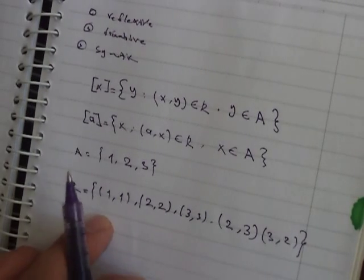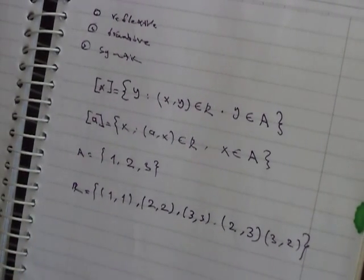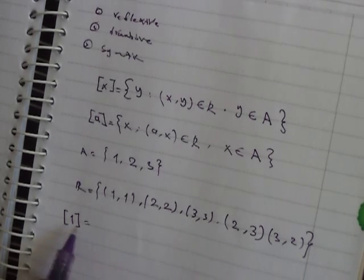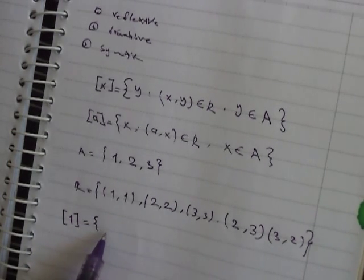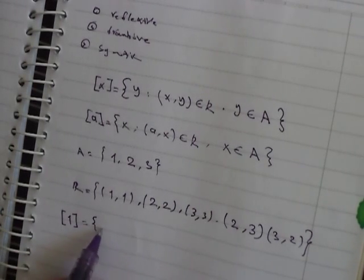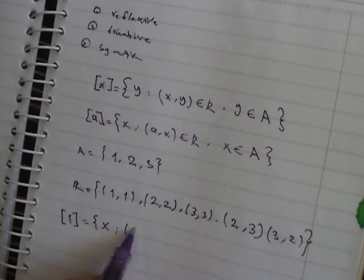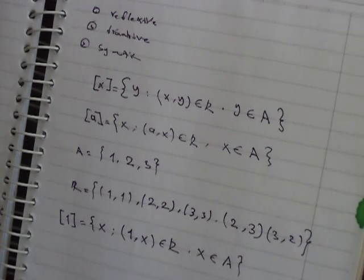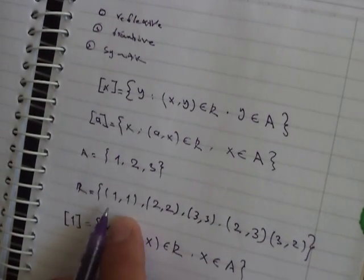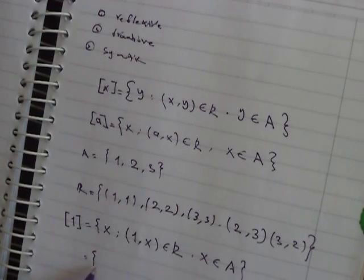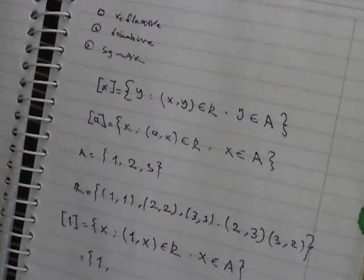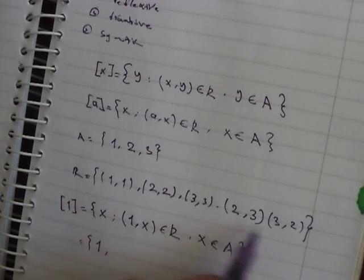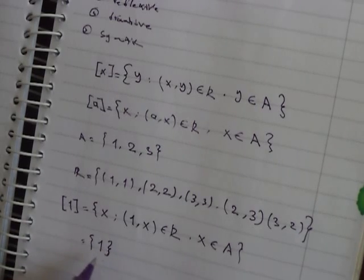This is a relation on this set. We want to find the class of 1. The class of 1 equals the set of x such that the ordered pair (1, x) belongs to the relation and x belongs to A. We have (1,1), so 1 belongs to the class of 1. We have nothing else with 1, so the class of 1 equals {1}.